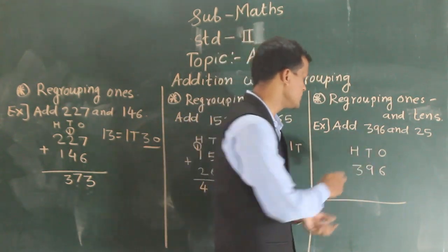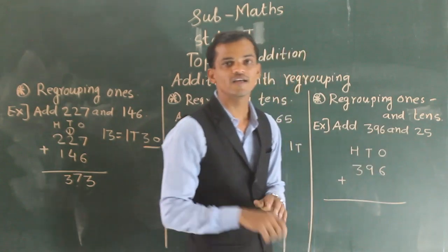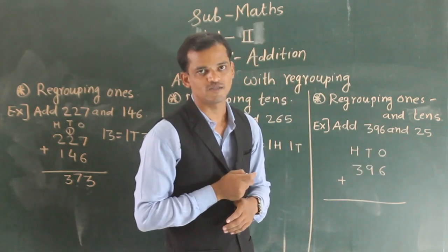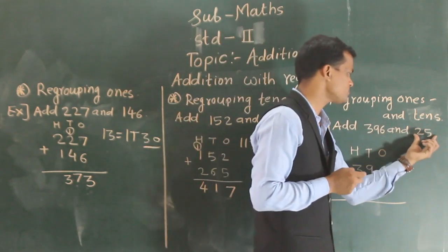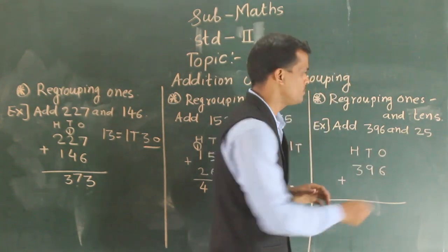So first write at 2 digit number and while writing 2 digit number, start from ones place. While writing 2 digit number, start from ones place.